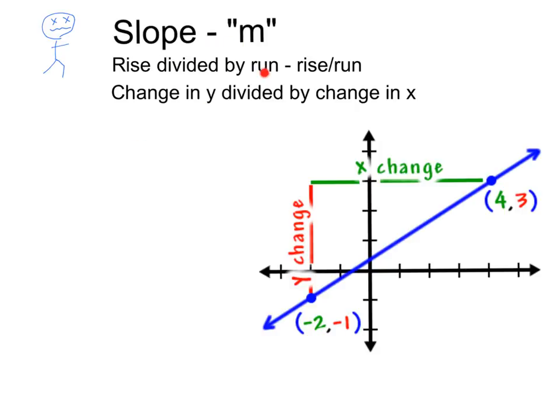Once again, the slope, or m, can be written as the rise divided by the run, or rise over run, or the change in y divided by the change in x. Both are the same thing, just a different way of thinking about it.